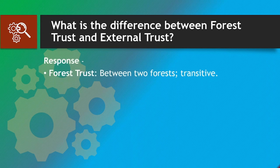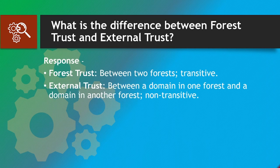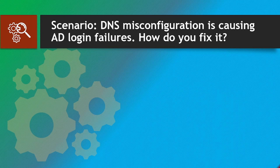What is the difference between a forest trust and an external trust? Response: Forest trust — between two forests, transitive. External trust — between a domain in one forest and a domain in another forest, non-transitive.